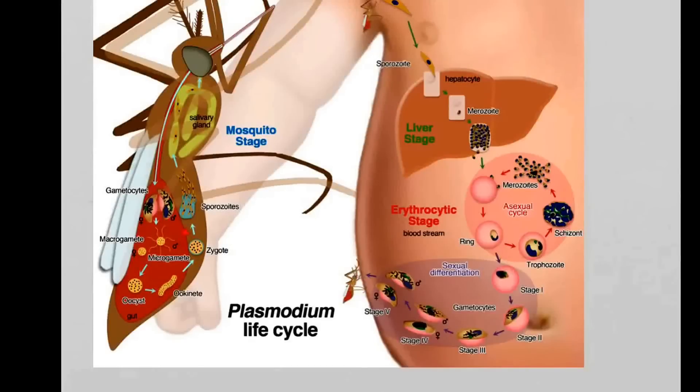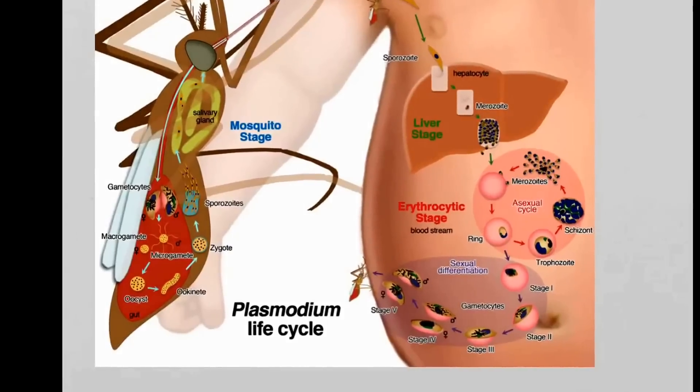This zygote then develops into sporozoites. These sporozoites then move back into the salivary gland, and the reproductive loop is closed. These sporozoites are then waiting in the salivary gland until they are injected into a human again, where they can start their next life cycle.